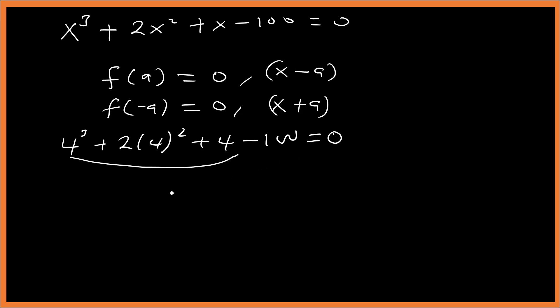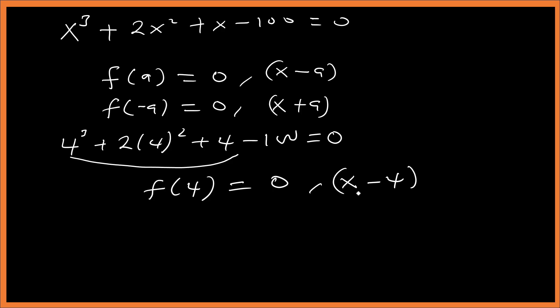Testing x equals 4: f(4) equals zero. Therefore x minus 4 is a factor of x cubed plus 2x squared plus x minus 100.